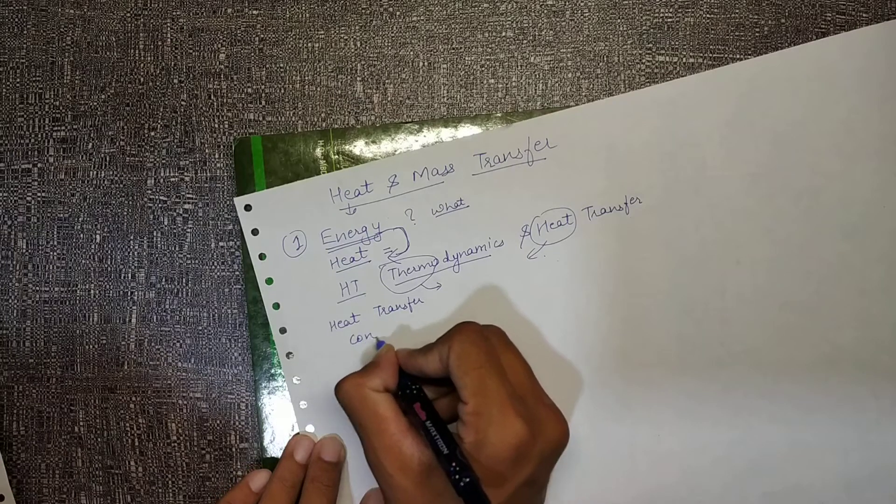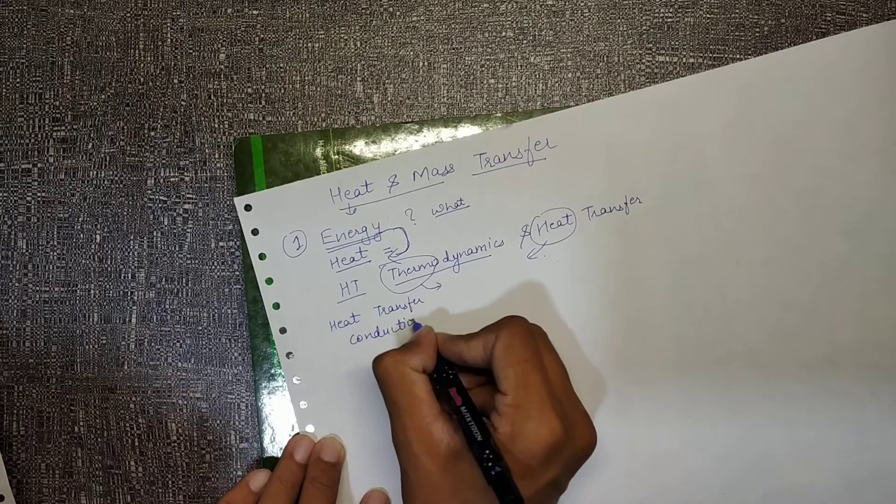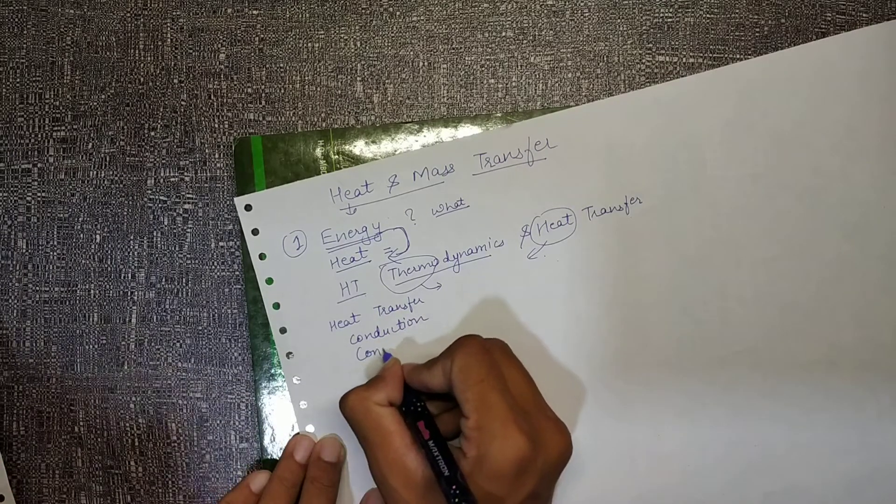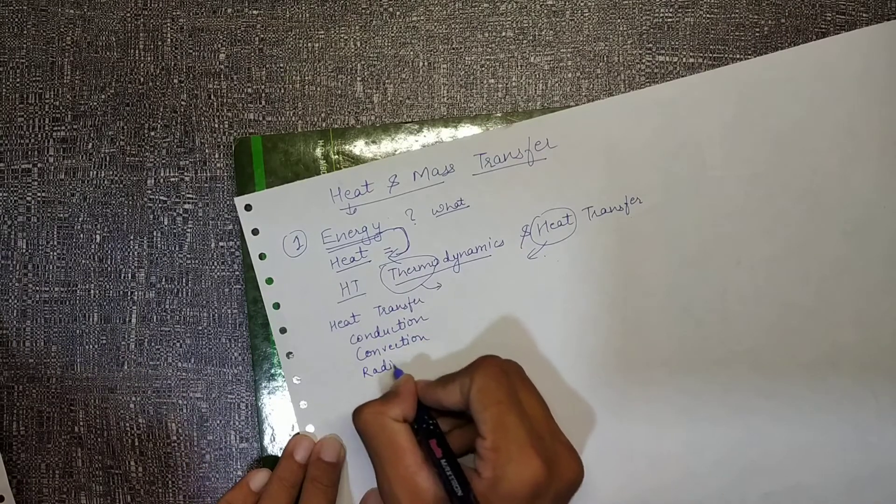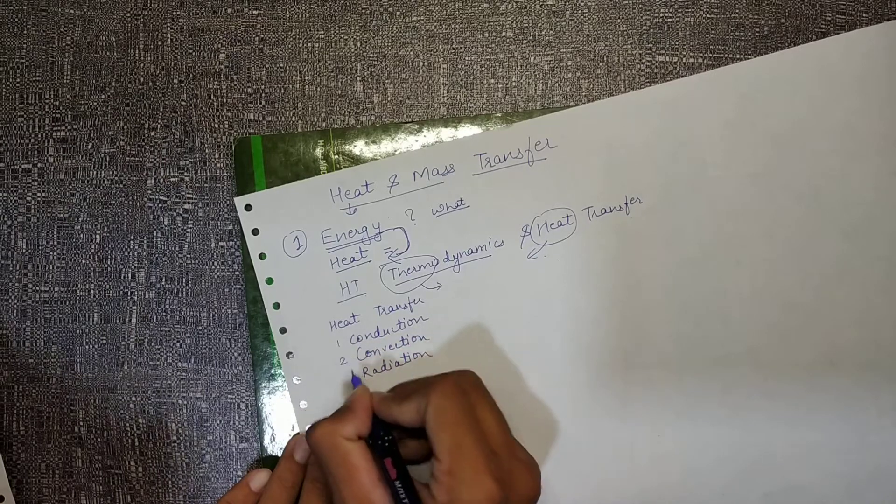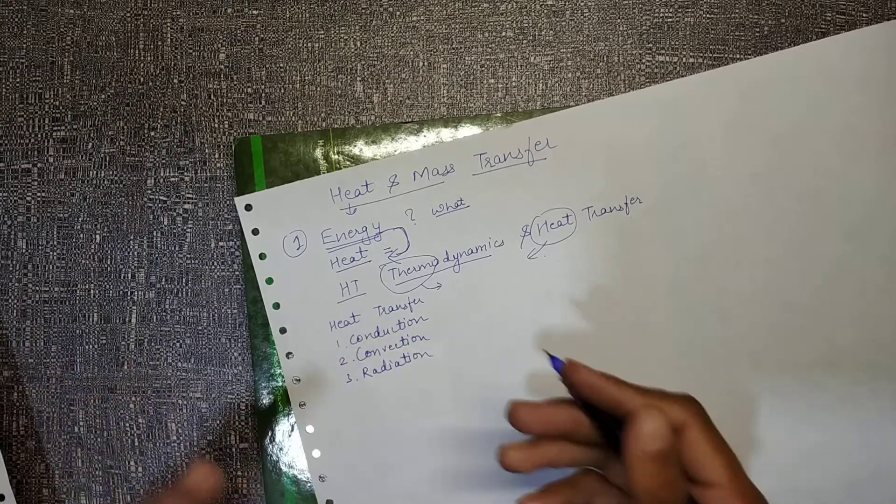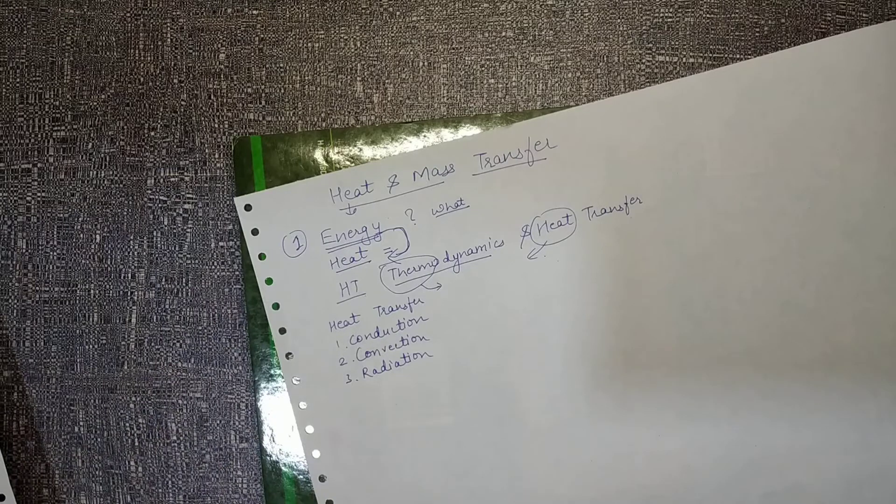Like what is conduction and how it happens, what are the equations, etc. And then the last one was radiation. So there are one, two, three, and then we'll go into more details of this. That's the introduction for you and what all things will be covered in this course or the subject. Look forward to the next video. Thank you.